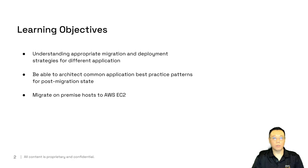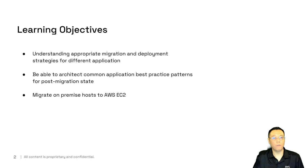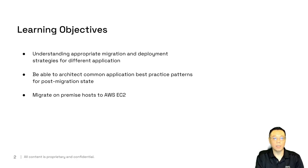Our learning objectives today include understanding appropriate migration and deployment strategies to different applications and workload environments. We also want to be able to architect common application best practice patterns from post-migration state — what's your final state for production, even from a different production source? And finally, we'll learn how to migrate on-premise hosts or simulate that effect inside your AWS EC2 instances from different VPCs.